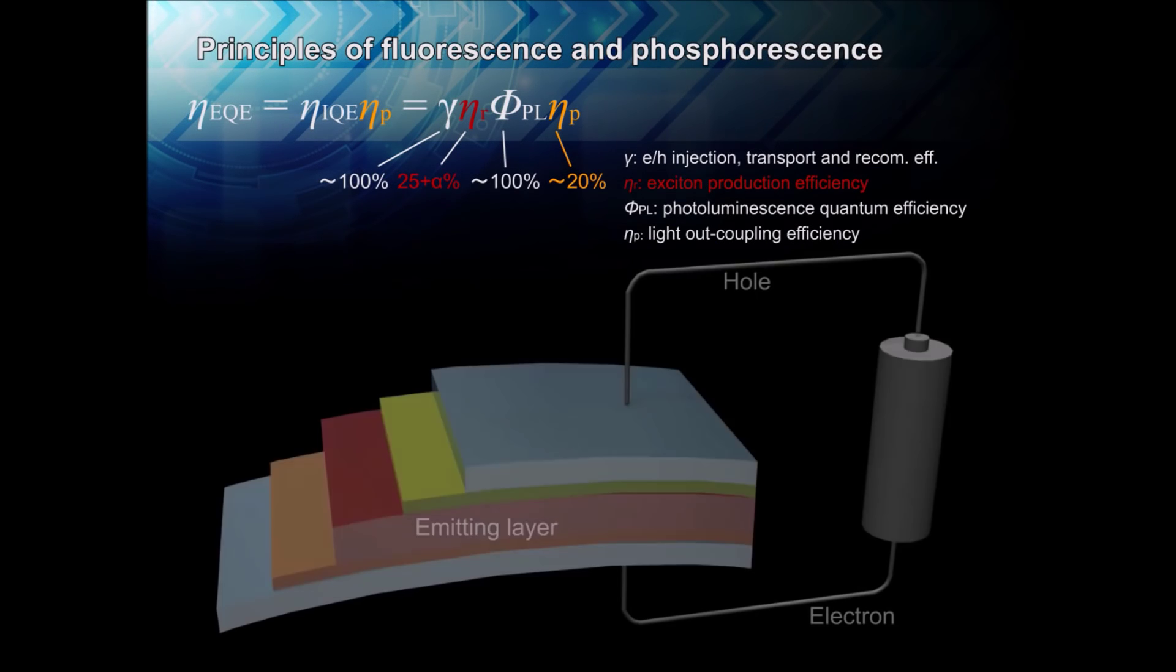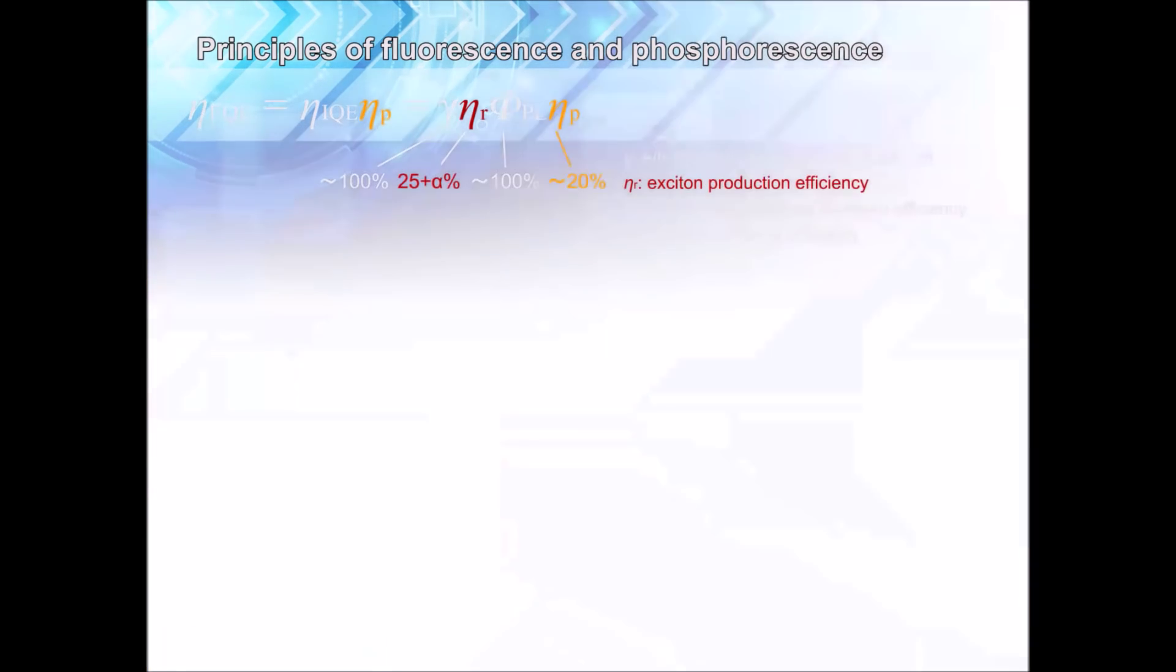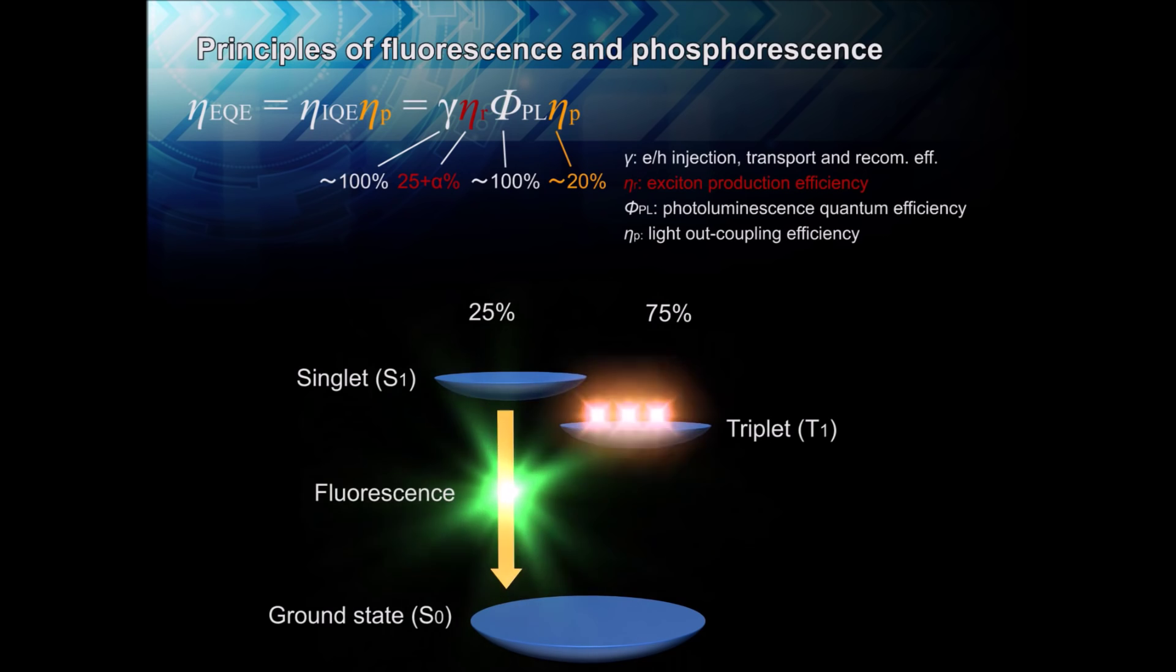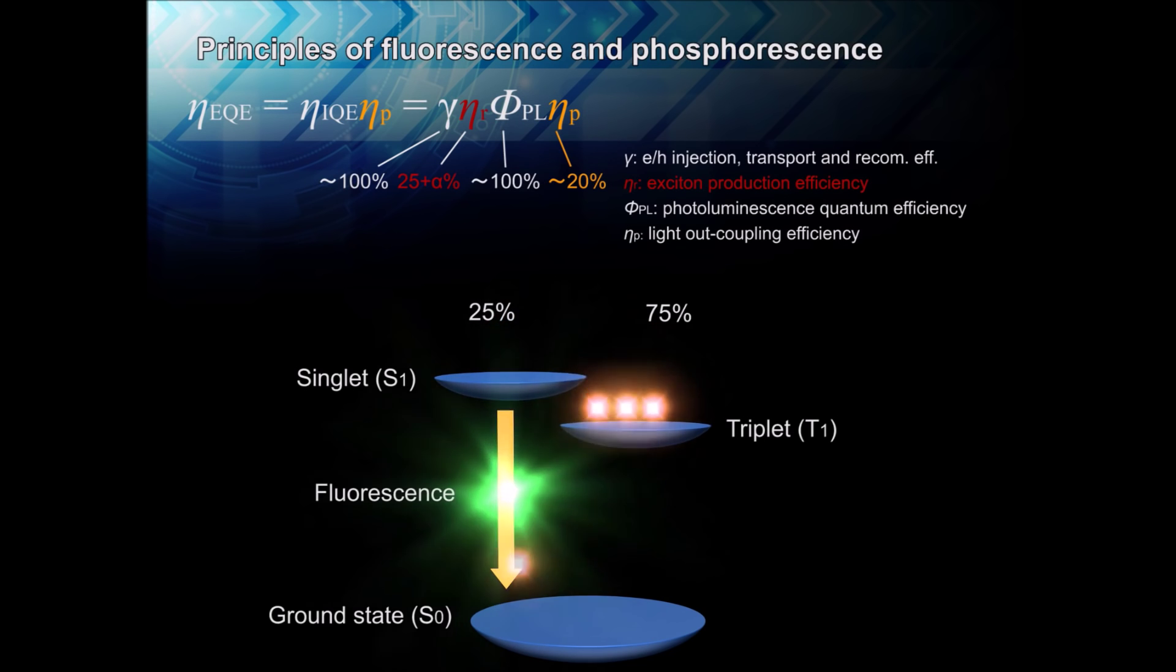When electricity is applied to an organic light-emitting diode, or OLED, positive and negative charges are injected into the device. Before light is emitted, a positive charge and a negative charge meet on the same molecule, forming an energetic state called an exciton. The electrically-created excitons come in two varieties, singlets and triplets, with 25% of the excitons naturally being created as singlets and 75% as triplets.